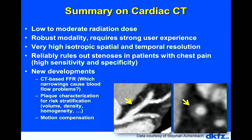Cardiac CT today offers low to moderate radiation dose and is a very robust modality, though it requires user experience — knowing how to prepare the patient and choose the scan mode. It provides very high isotropic and temporal resolution and can reliably rule out stenosis in patients with chest pain. New developments include fractional flow reserve computation from CT data — identifying which coronary narrowings actually cause blood flow problems — and plaque characterization to assess rupture risk.